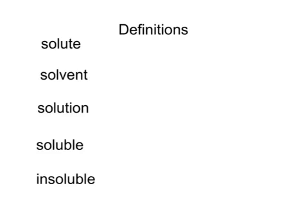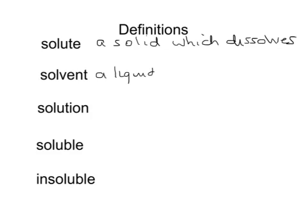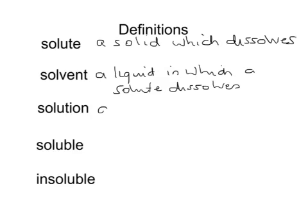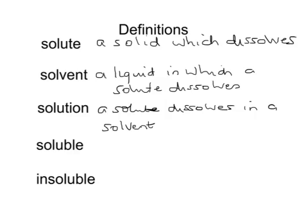But first, some definitions you need to know. What do each of these terms mean? A solute is a solid which will dissolve. A solvent is a liquid in which a solute dissolves. A solution is made when a solute dissolves in a solvent — so a solution is a solute dissolved in a solvent.